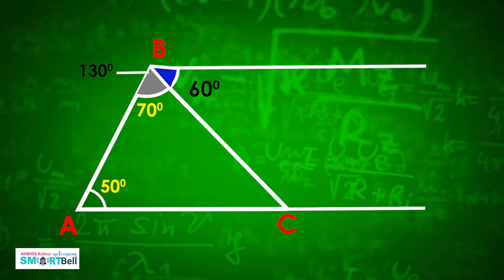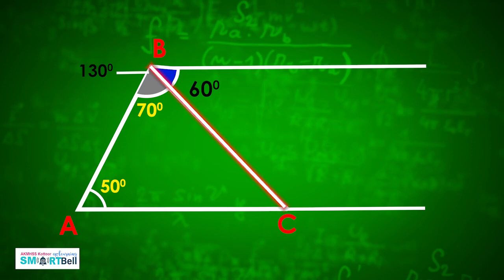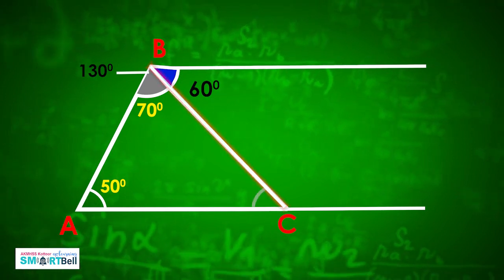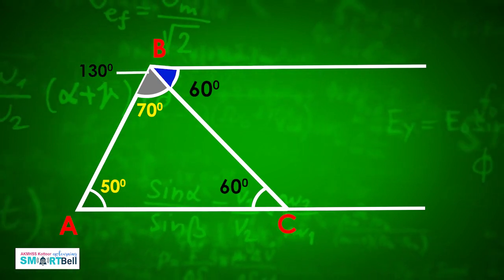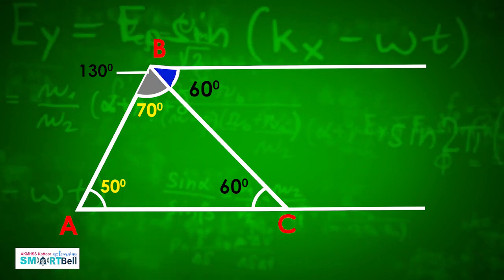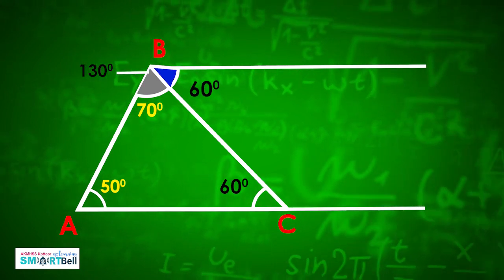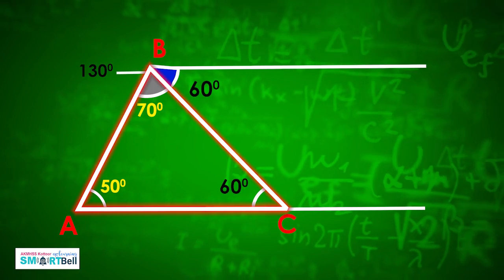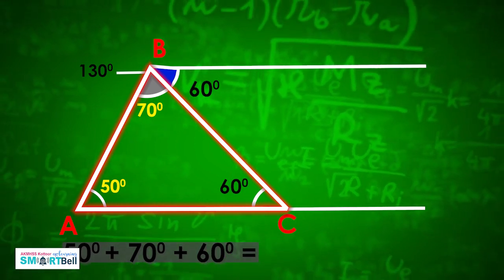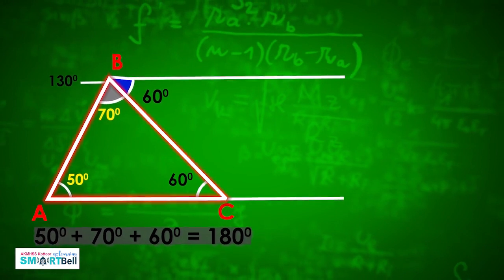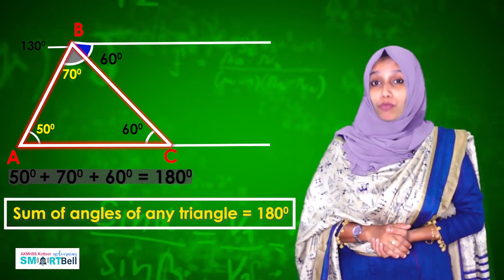If these two lines are parallel and this is another transversal, we know that this is an alternate angle, so here it is 60 degrees. We have already learned parallel lines, co-interior angles, and alternate angles. With the help of these, we found this angle. Now, adding all of them: 50 degrees plus 70 degrees plus 60 degrees equals 180 degrees.